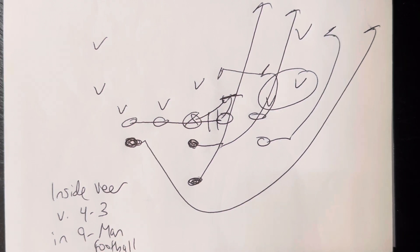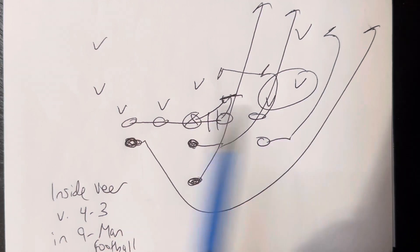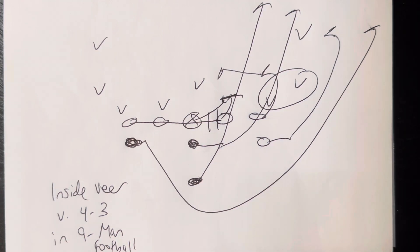A lot of times inside veer works better because you can't get outnumbered on the perimeter, and if the defense forces a pull pitch, you'll be better off because you're moving everything one hole wider and reading those people. So a lot of times in nine-man football, it's better to run inside veer, especially in a situation like this.